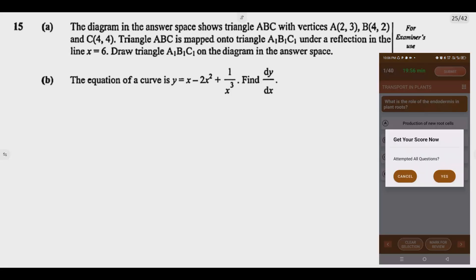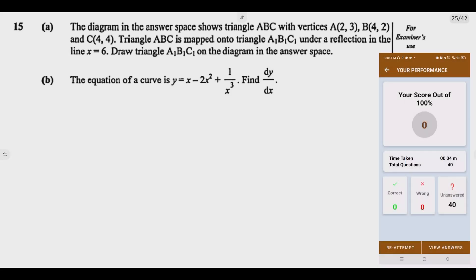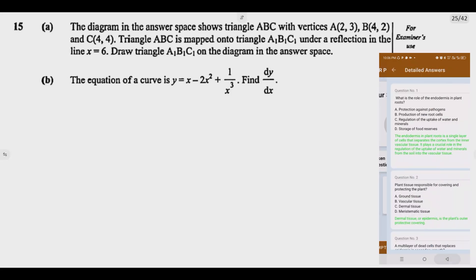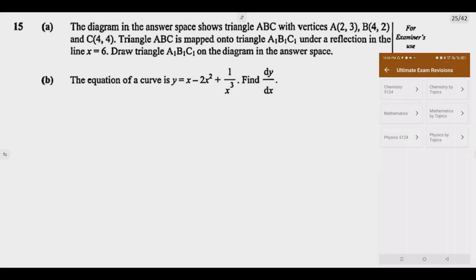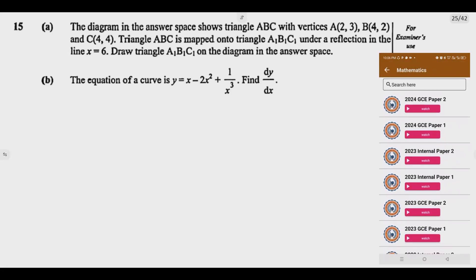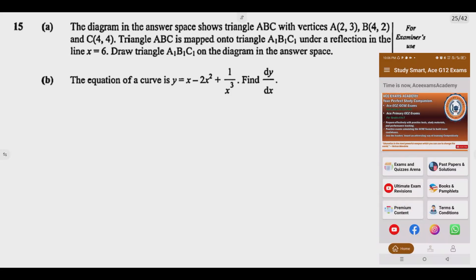Triangle ABC is mapped onto triangle A₁B₁C₁ where the ones are subscript under a reflection in the line X equals 6. Draw triangle A₁B₁C₁ on the diagram in the answer space.